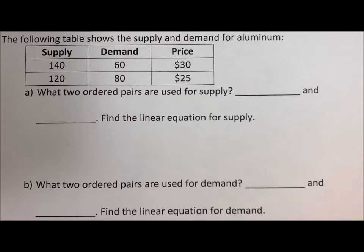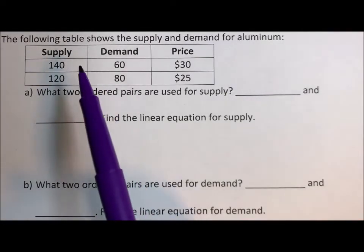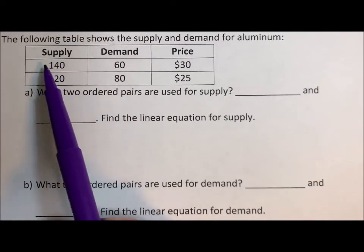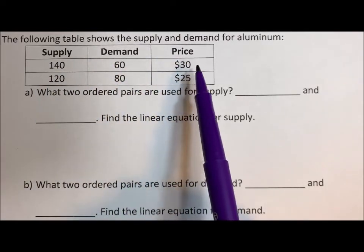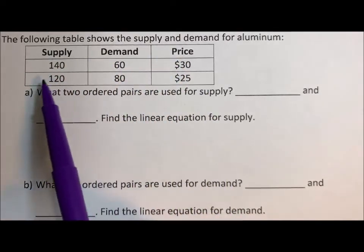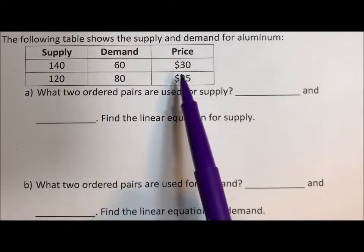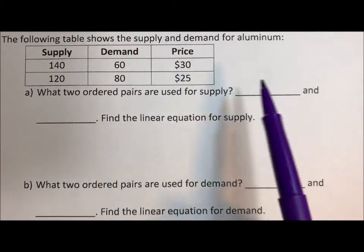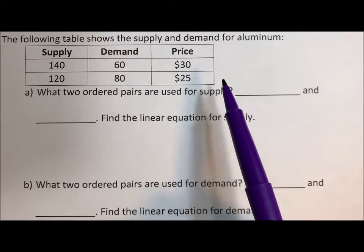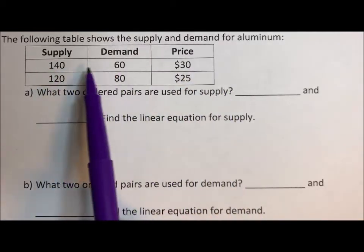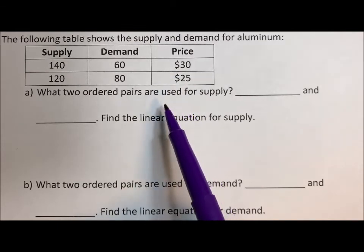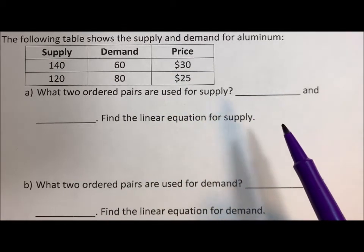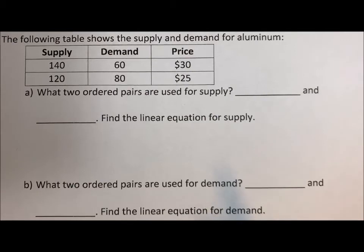The following table shows the supply and demand for aluminum. So we have, if the supply were 140 units and the demand was 60 units with a price of $30, supply was 120 units, demand was 80 units with a price of $25. The idea is we're trying to make the supply and demand the same number of units at the one price point. We're trying to do that so that we can maximize profits. At the end of the day, businesses care about profit.